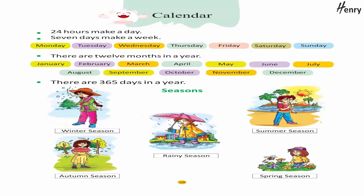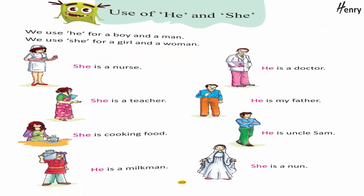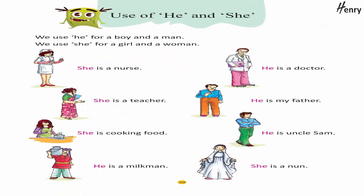Months of the year: January, February, March, April, May, June, July, August, September, October, November, December. There are 365 days in a year. Seasons: Winter season, Rainy season, Summer season, Autumn season, Spring season.